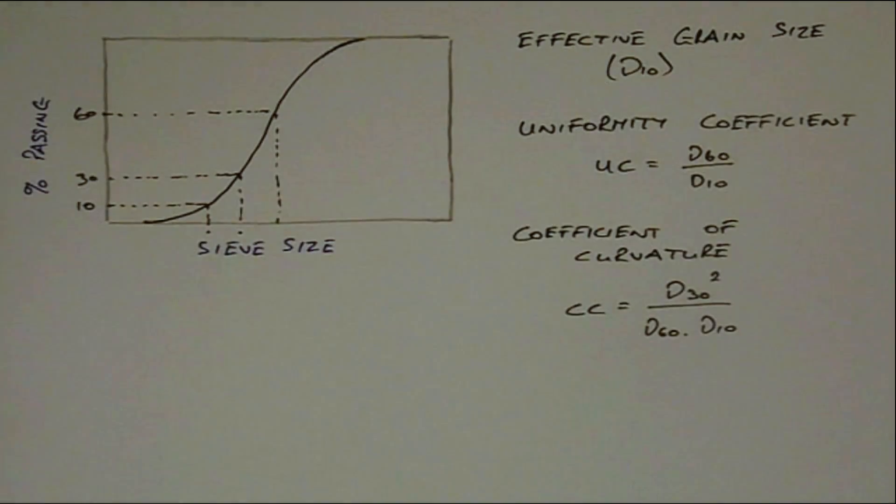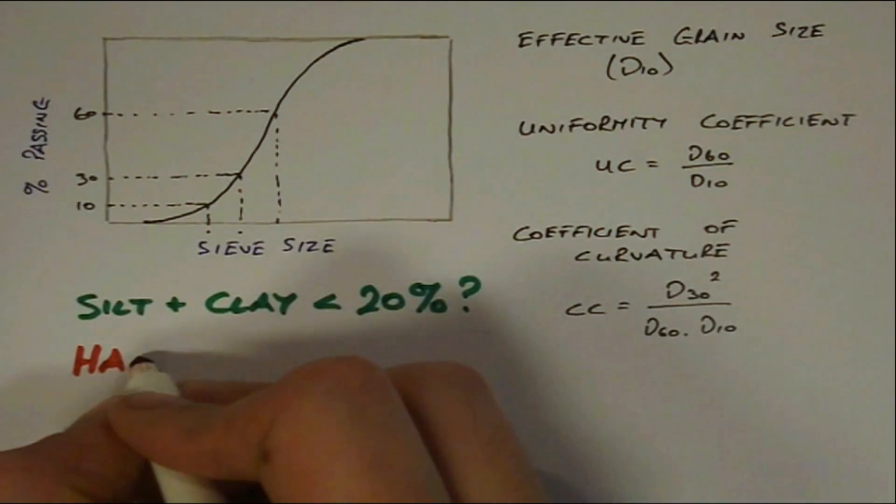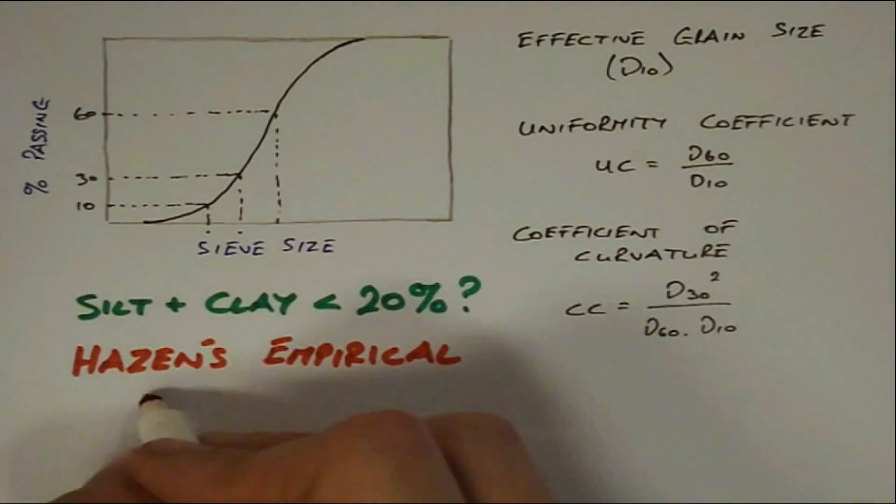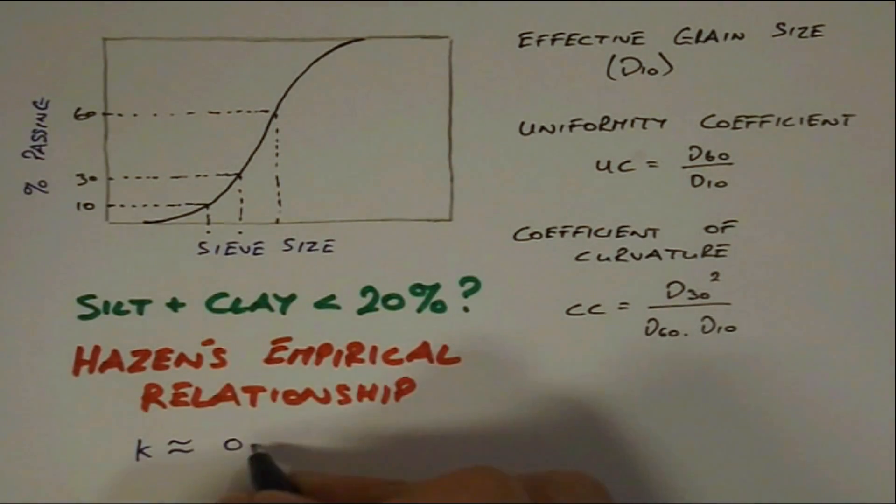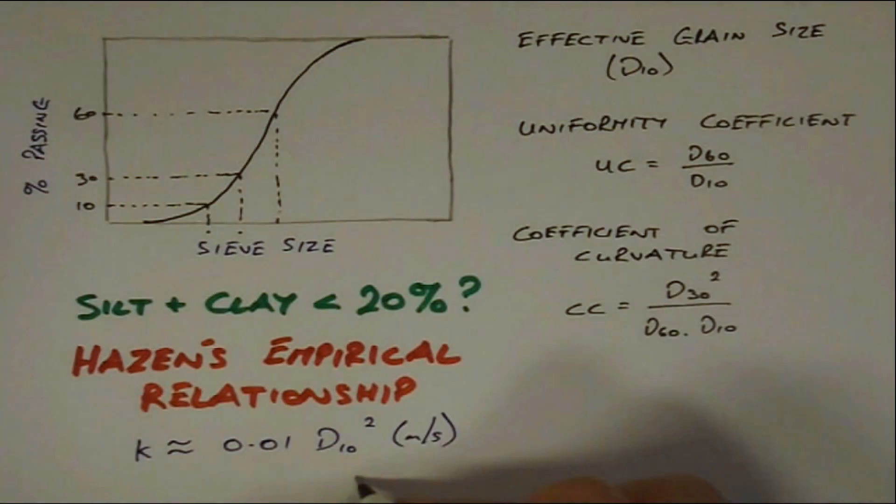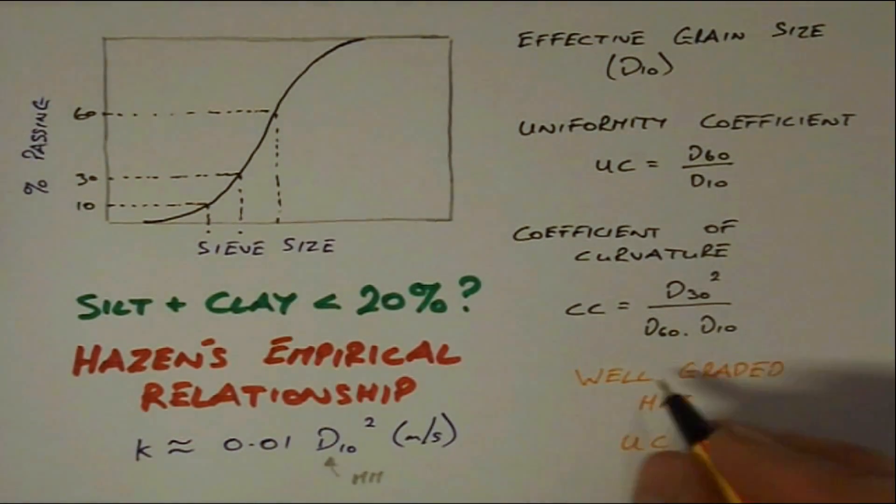For example, in soils having less than 20% silt and clay sized particles, its permeability K can be estimated using Hazen's empirical relationship, where D10 is input in millimeters. We can also tell if a soil is well graded from its uniformity coefficient.